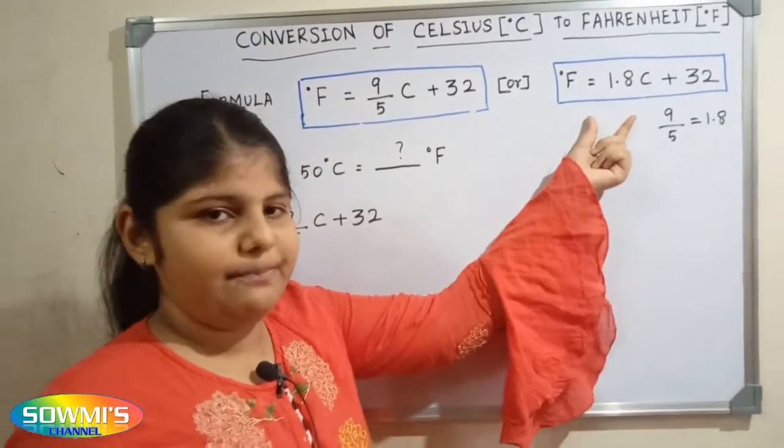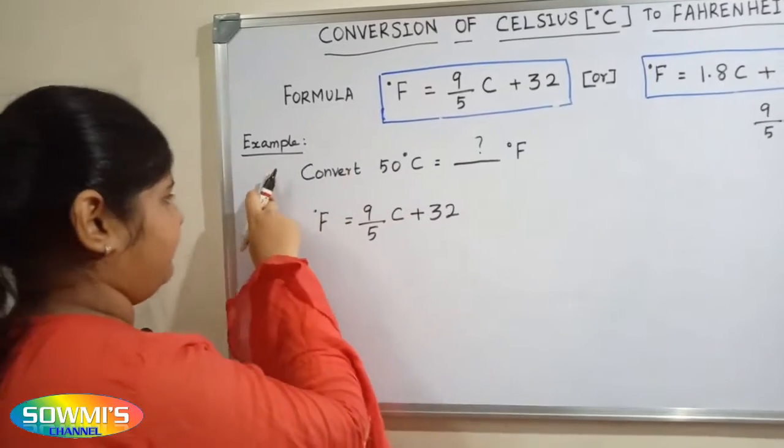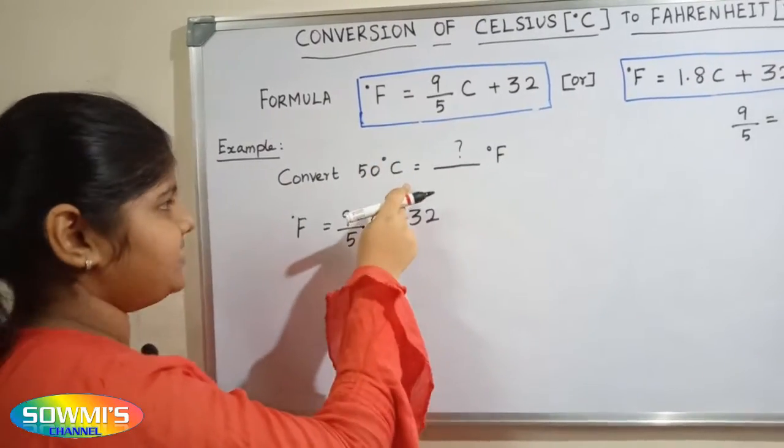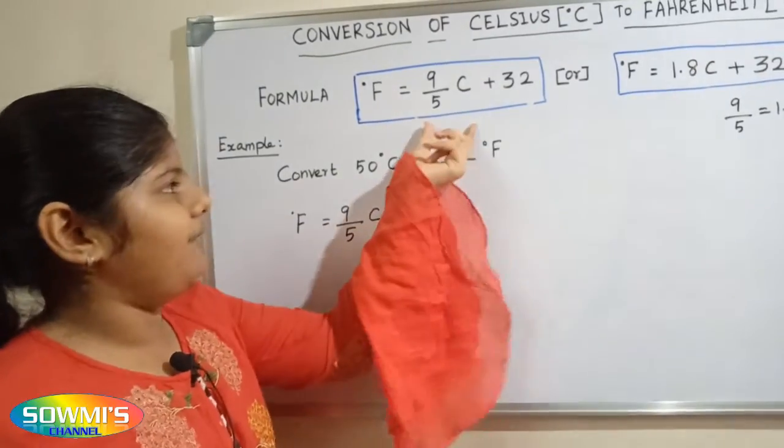Here we can use 1.8 instead of using 9 by 5. For example, convert 50 degree Celsius into degree Fahrenheit. Now we will apply this formula.